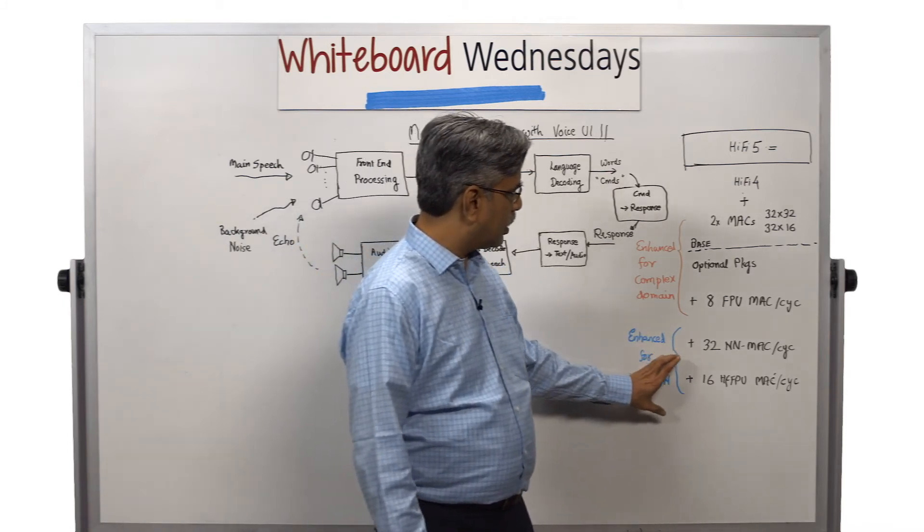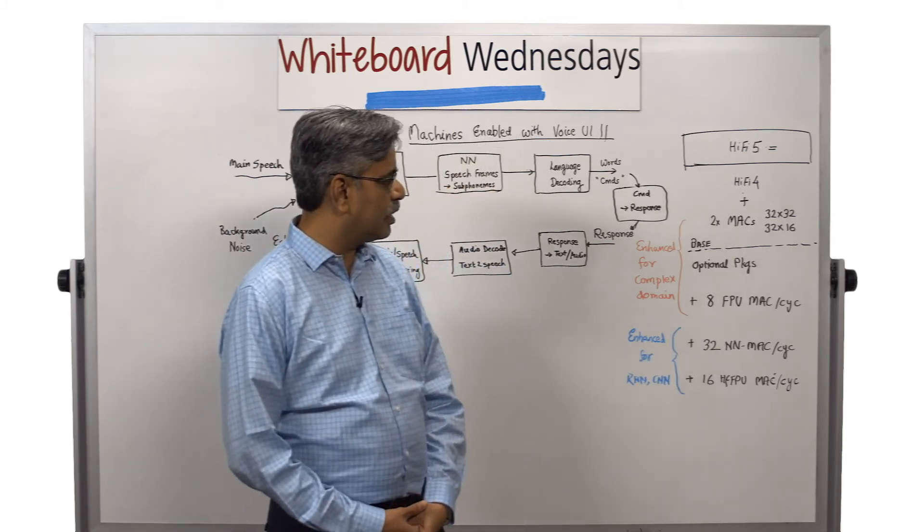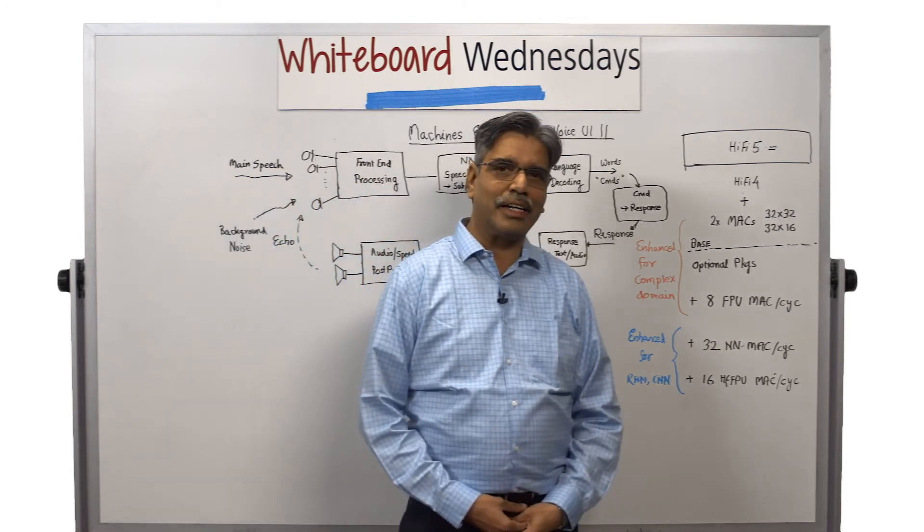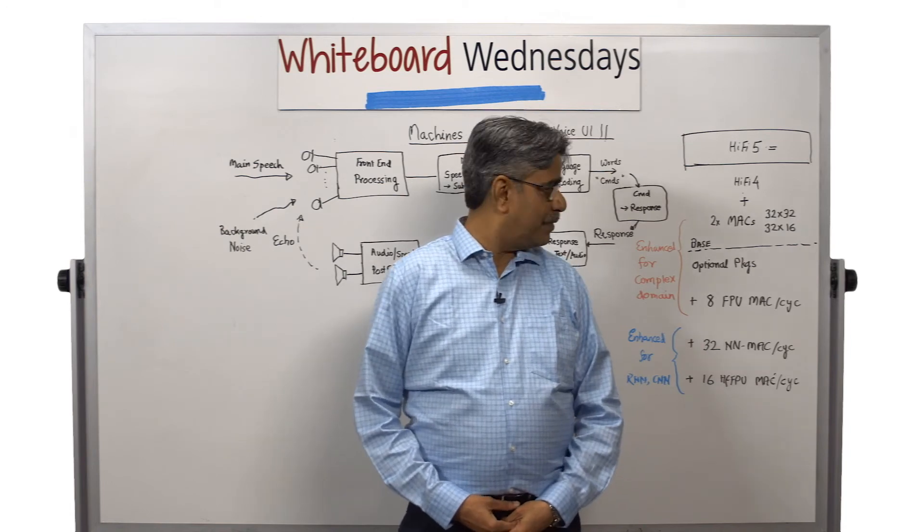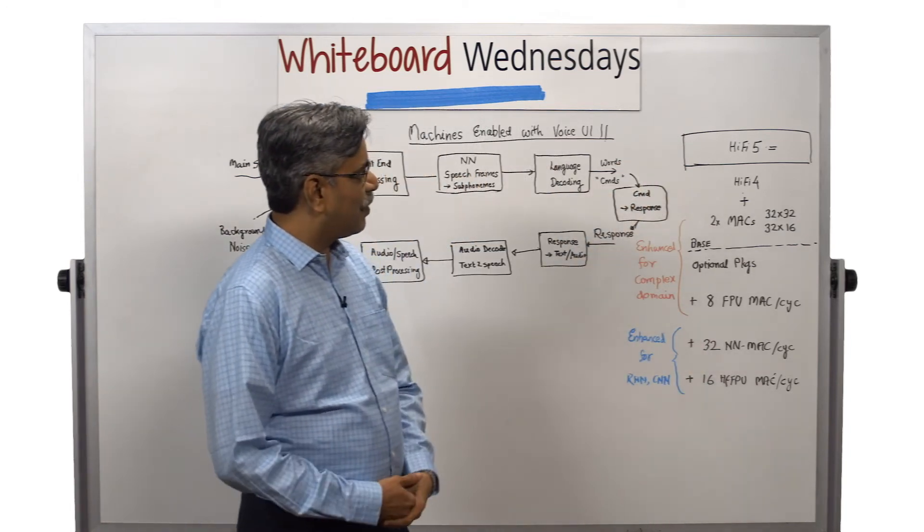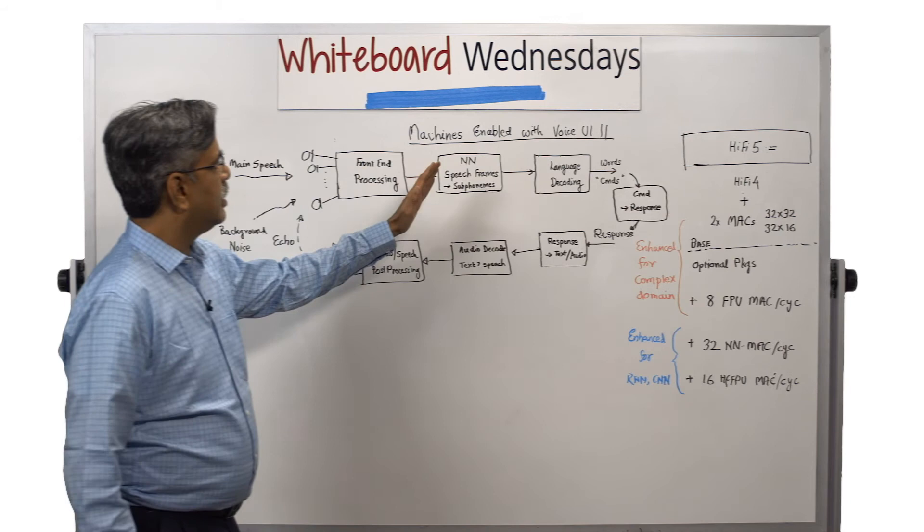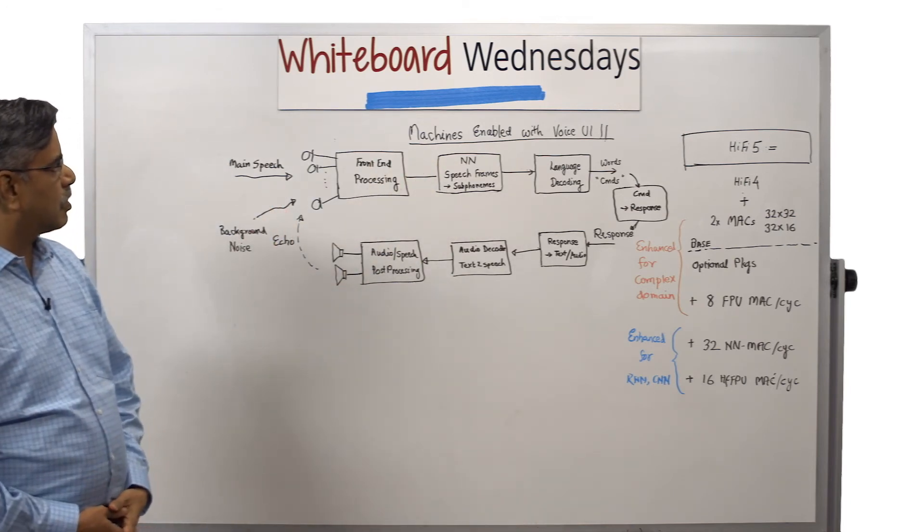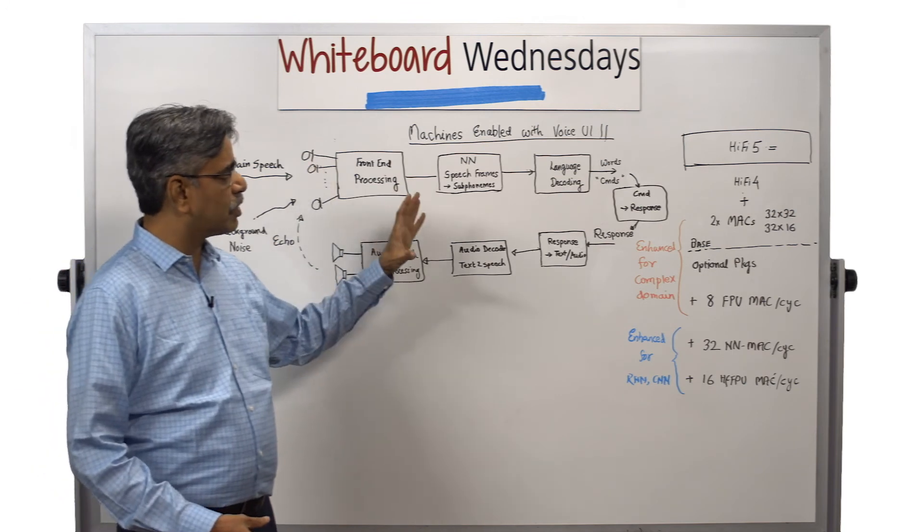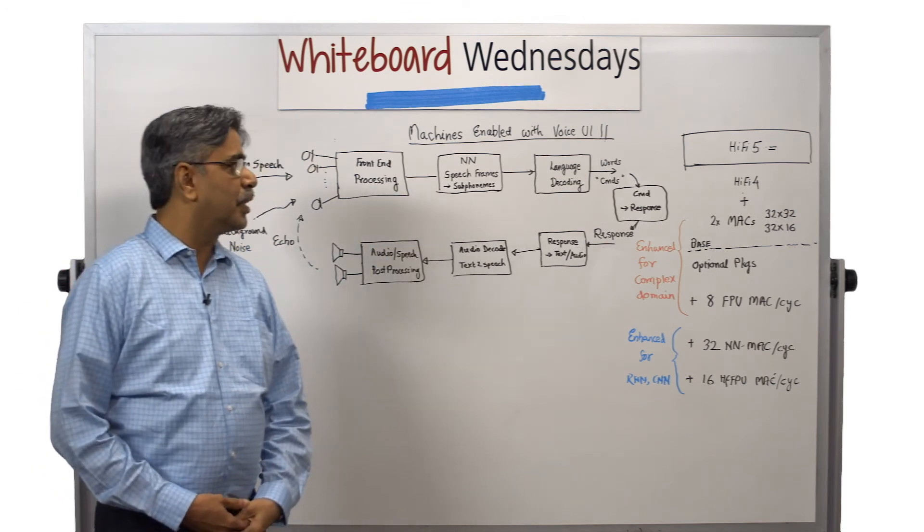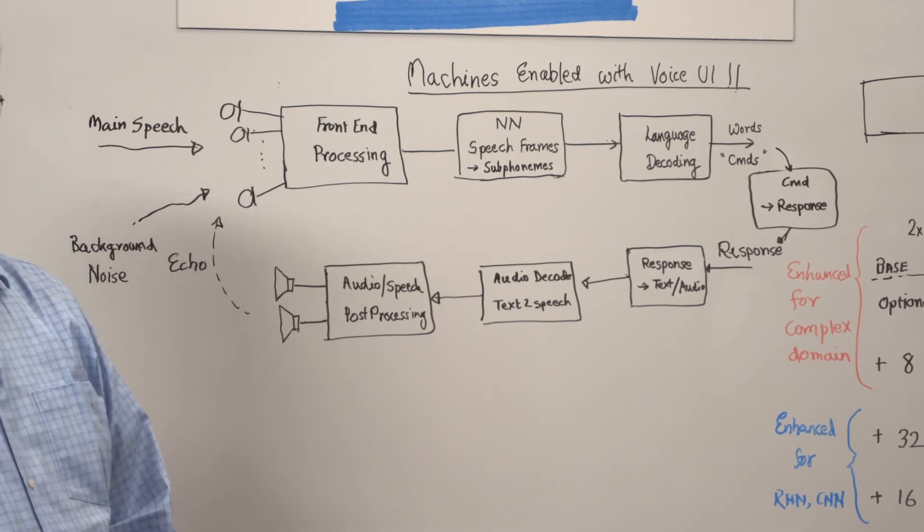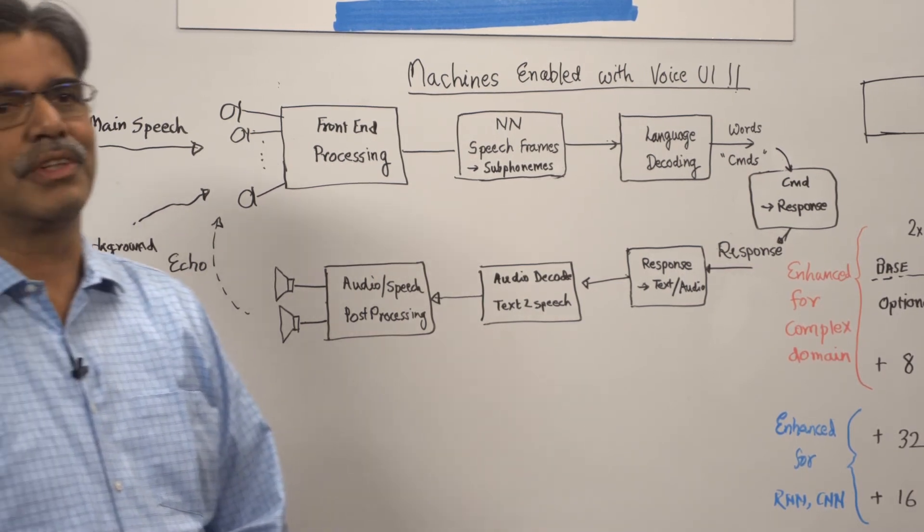And the lower part, the NN-MACs and half-precision FPU, they're enhanced for two types of speech neural networks, RNNs and CNN. So the HiFi 5 really addresses machine enabled with voice UI, which tries to do not just audio pre-processing, complex domain audio pre-processing, but also the neural network part, which is required for voice-enabled UI machines.